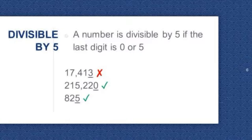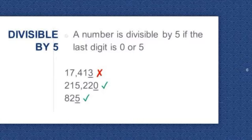Divisible by 5. A number is divisible by 5 if the last digit is 0 or 5. Let's try 17,413 — the last digit is 3, so 17,413 is not divisible by 5. Next, 215,220 — it ends in 0, so it's divisible by 5. 825 is also divisible by 5 because the last digit is 5.